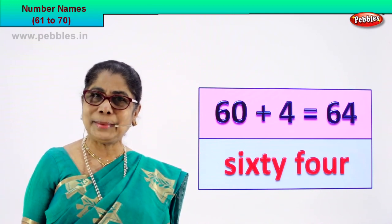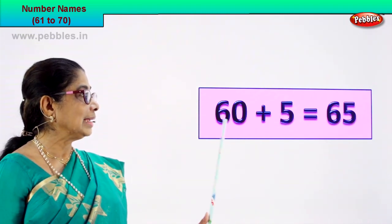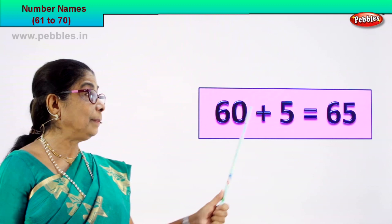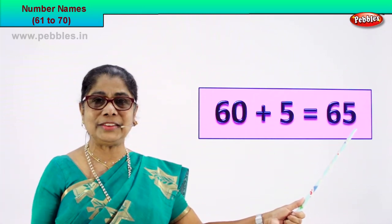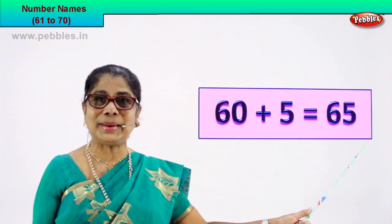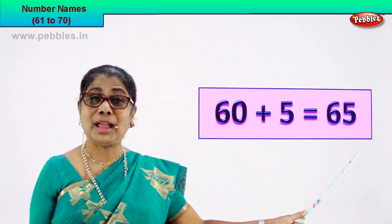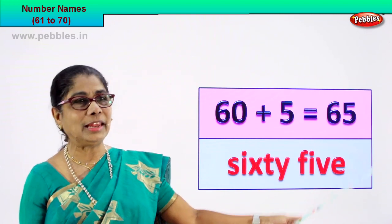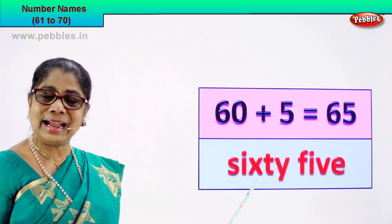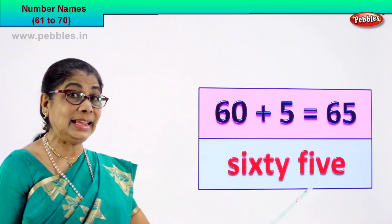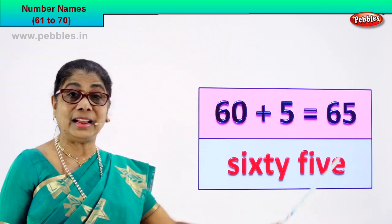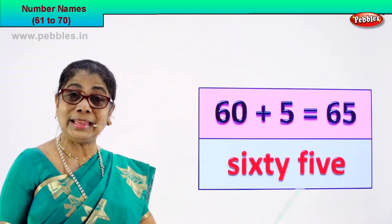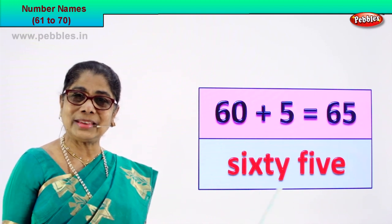Did you learn? Shall we go to our next number? 60 plus 5 is equal to 65. 6 and 5, 65. That's the numeral. How do we write the name of this number 65? You know 60 and you know the spelling of 5. S-I-X-T-Y, and F-I-V-E. Numeral 65 and its name is sixty-five. You learn to write its spelling and name correctly.